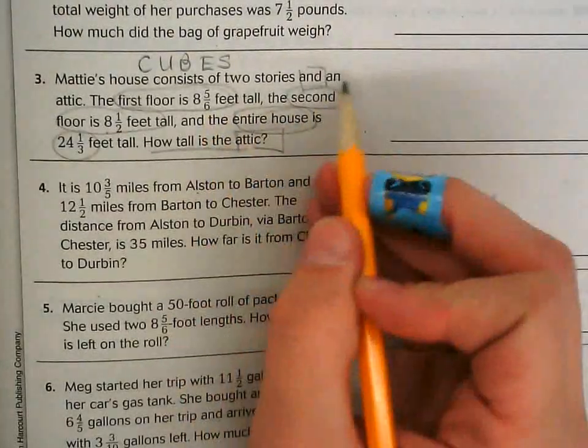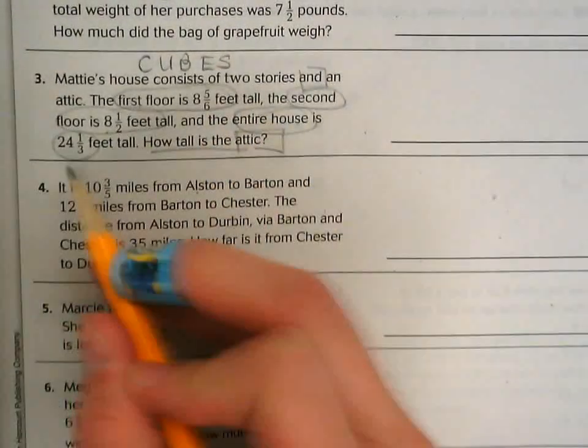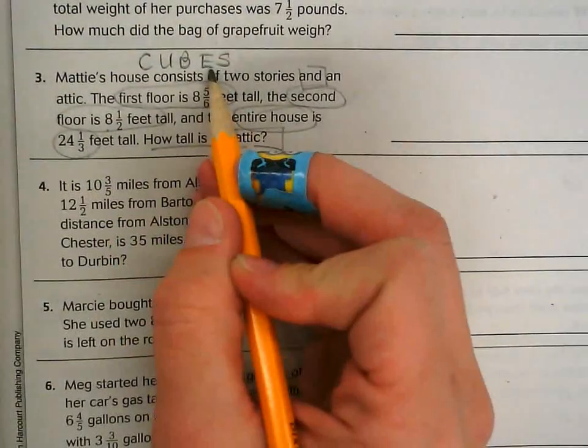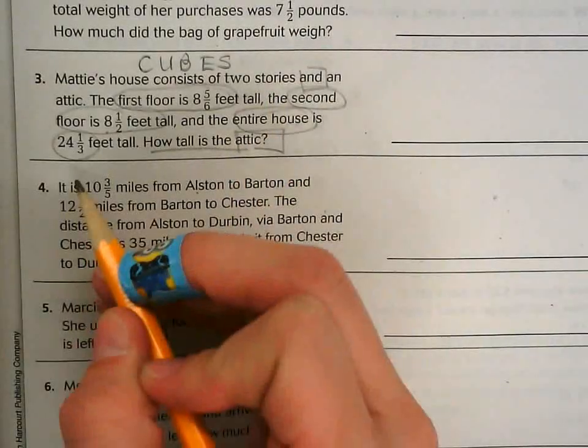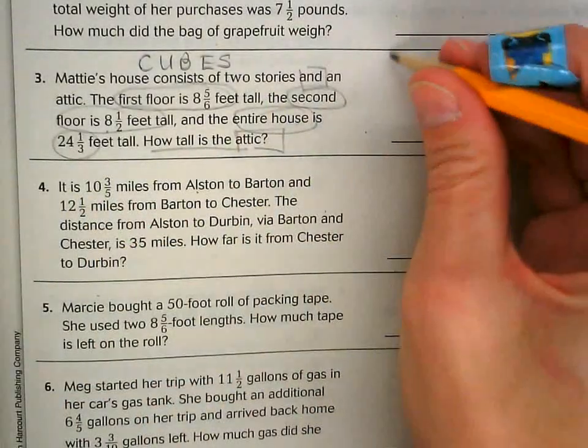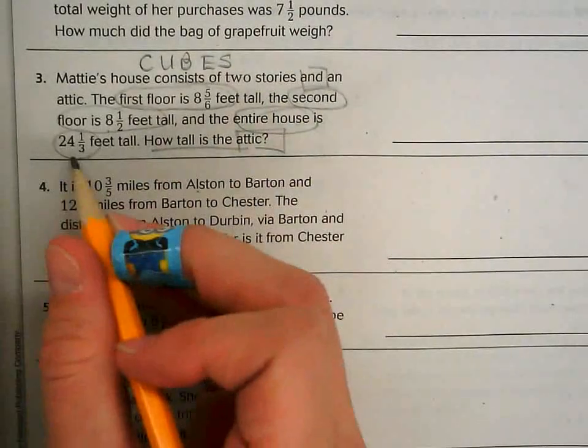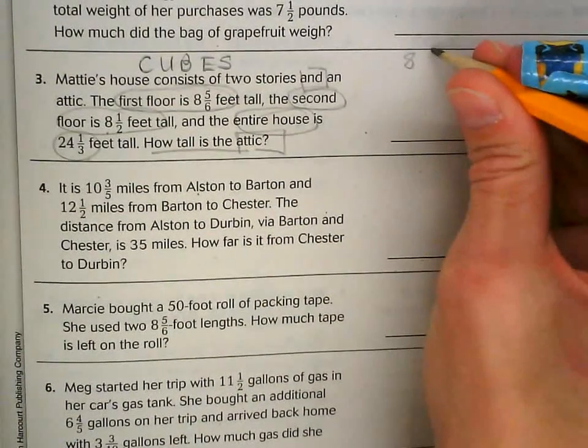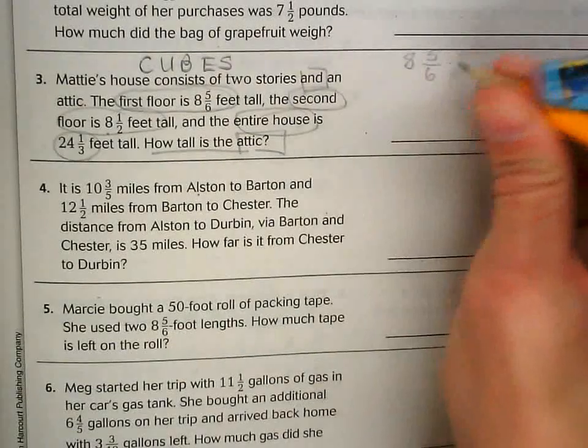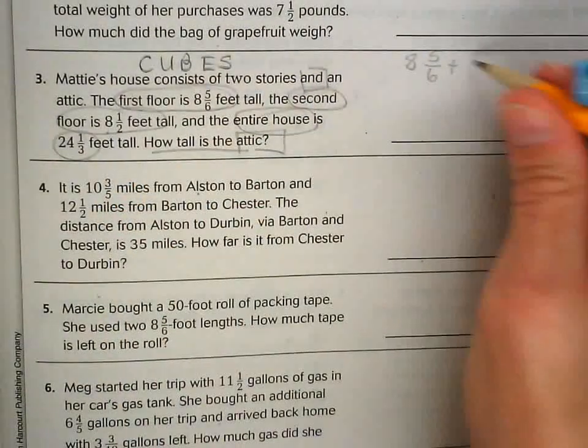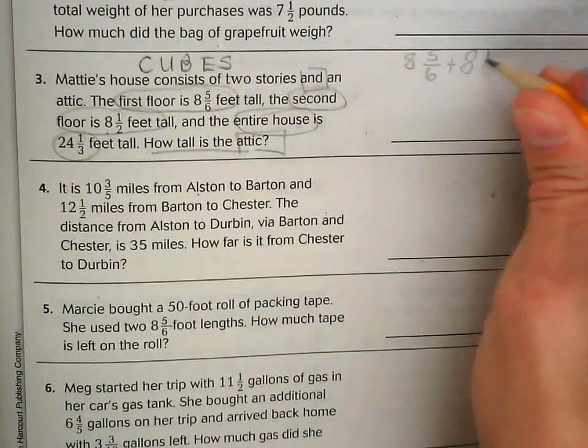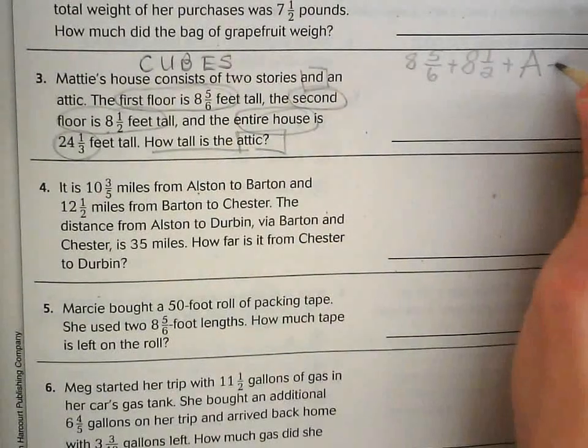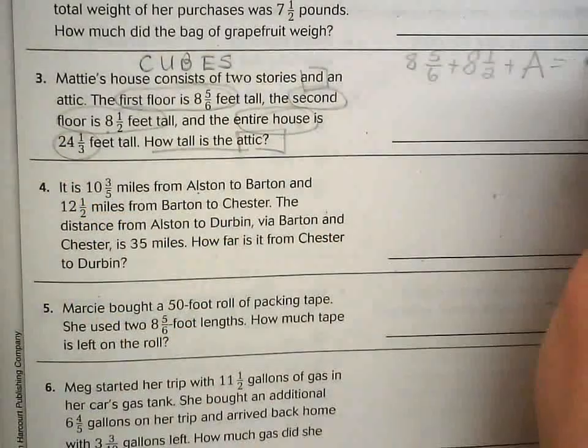I'm going to add those three - the first floor, second floor, and the attic - to get a total of 24 and 1/3. Now I've figured out some of my keywords. I'm going to evaluate an expression. The total house is 24 and 1/3. The first floor is 8 and 5/6 plus 8 and 1/2 plus the attic. I'm just going to put an A in this place because I have no clue. And then the total is 24 and 1/3.